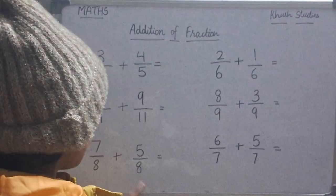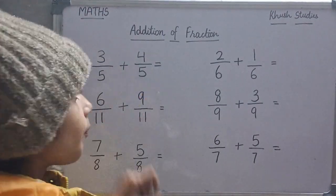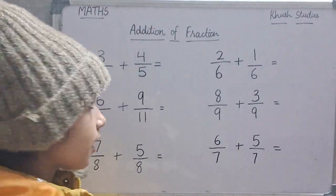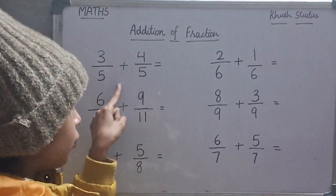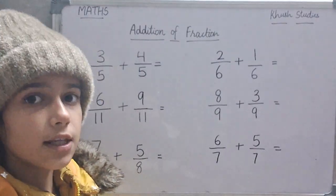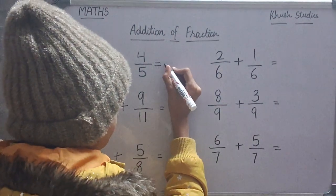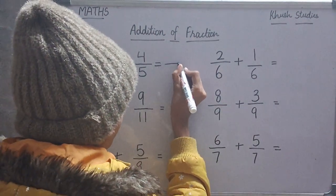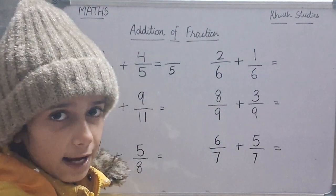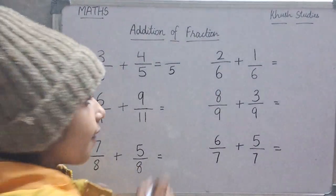First, we will add 3 upon 5 with 4 upon 5. As you can see, in both fractions, denominators are same. So, in the answer, denominators are same. Now, we will add the numerators. 3 plus 4 is 7, so the answer is 7 upon 5.